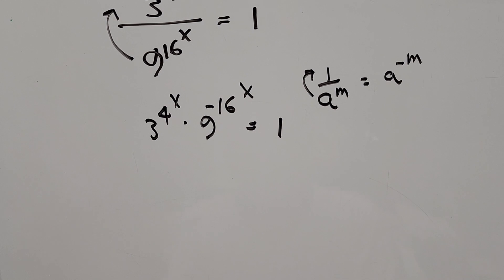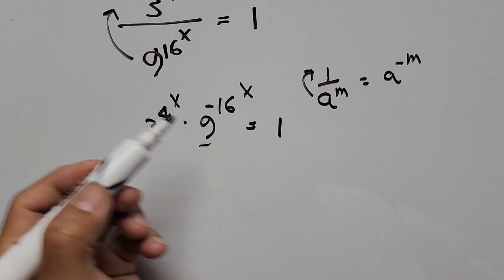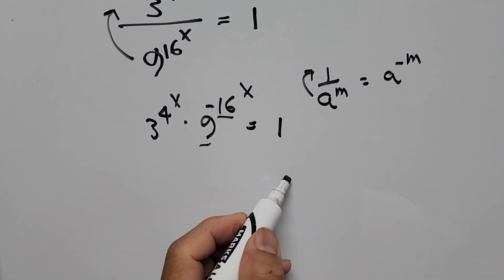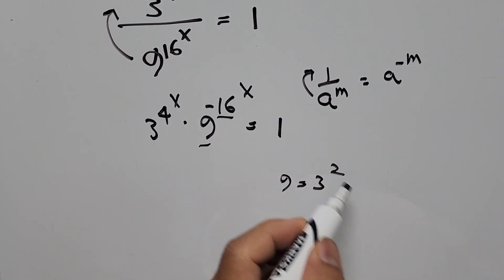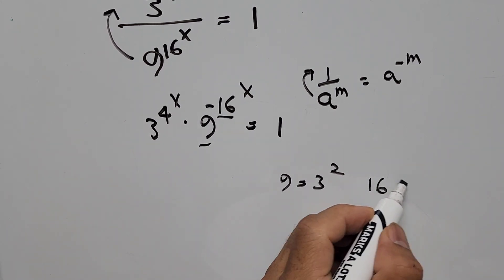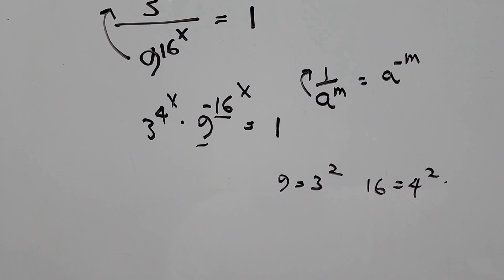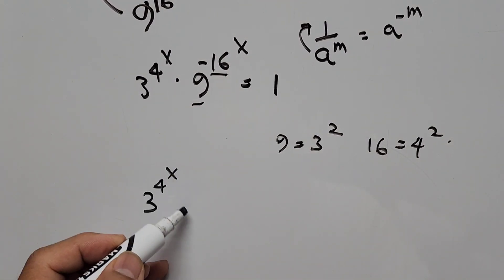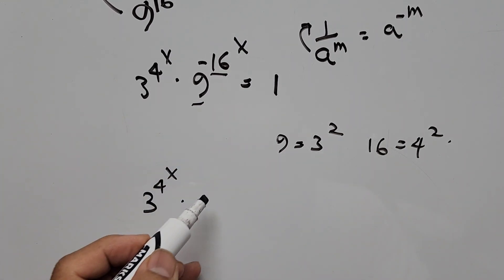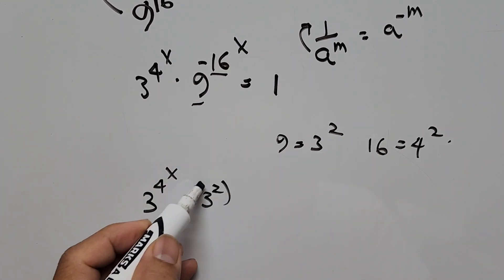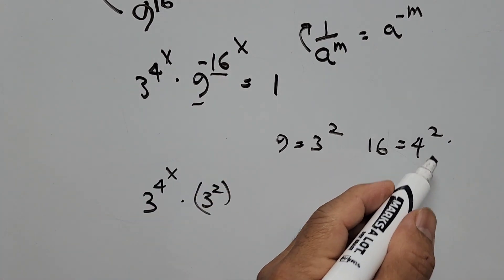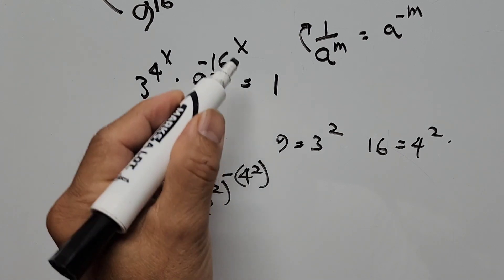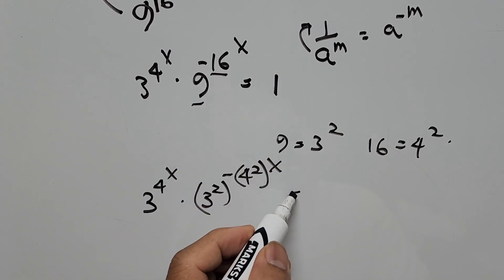Now we focus on the base: base 9 and the exponent base 16. So 9 can be written as 3 squared, and 16 can be written as 4 squared. So we have 3 to the power of 4 to the power of x, times 3 squared raised to 4 squared to the power of x, equals 1.